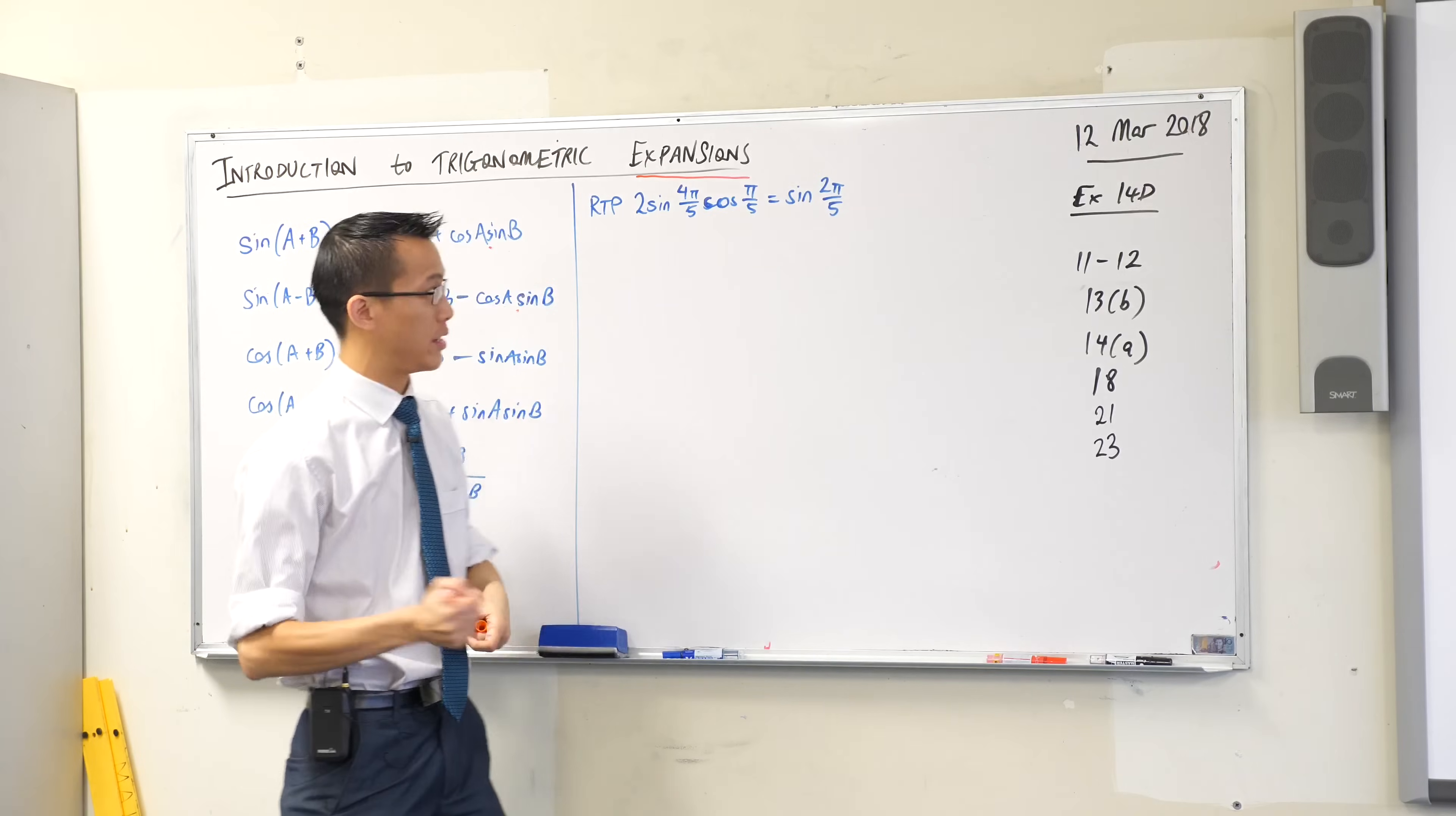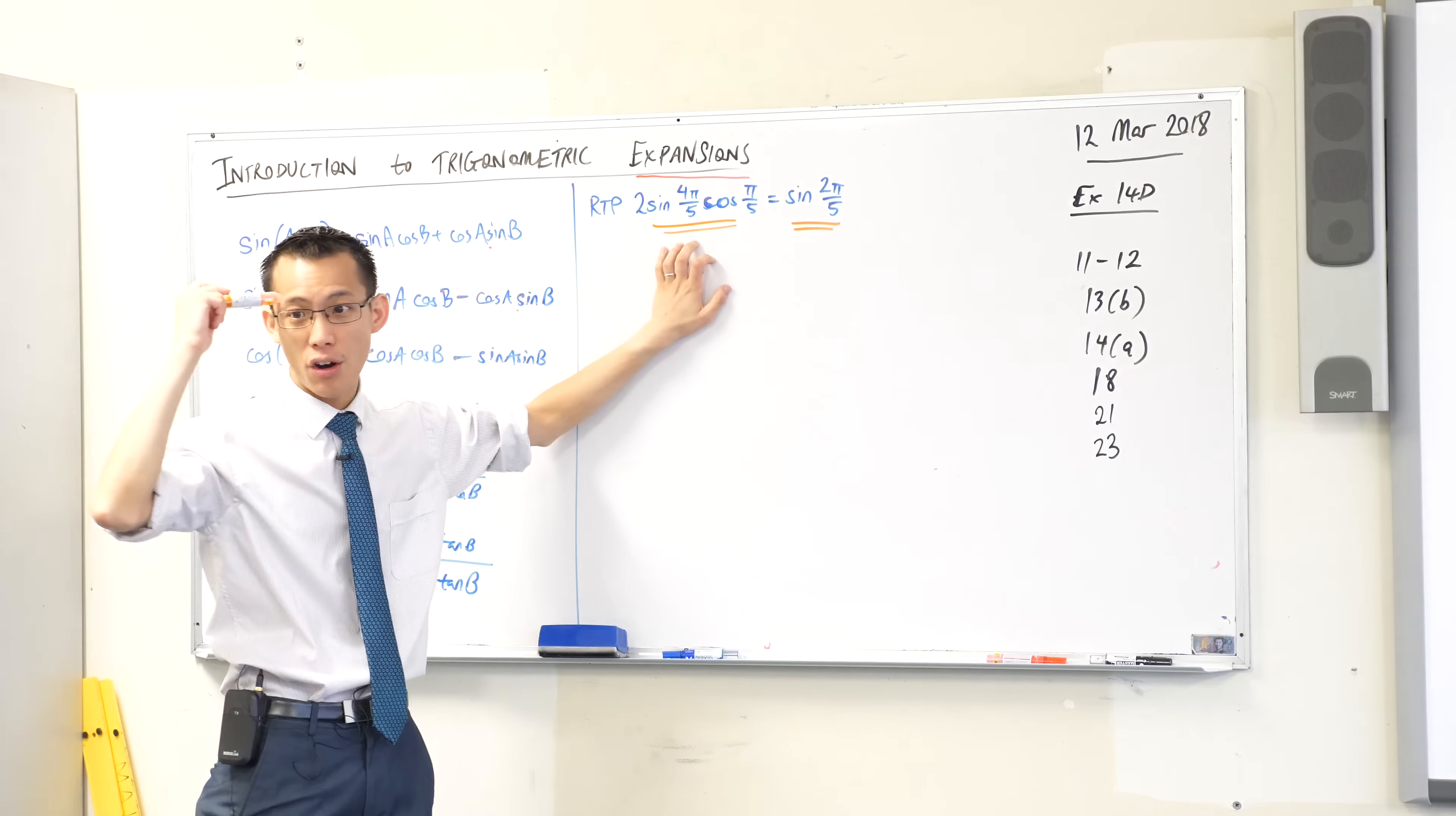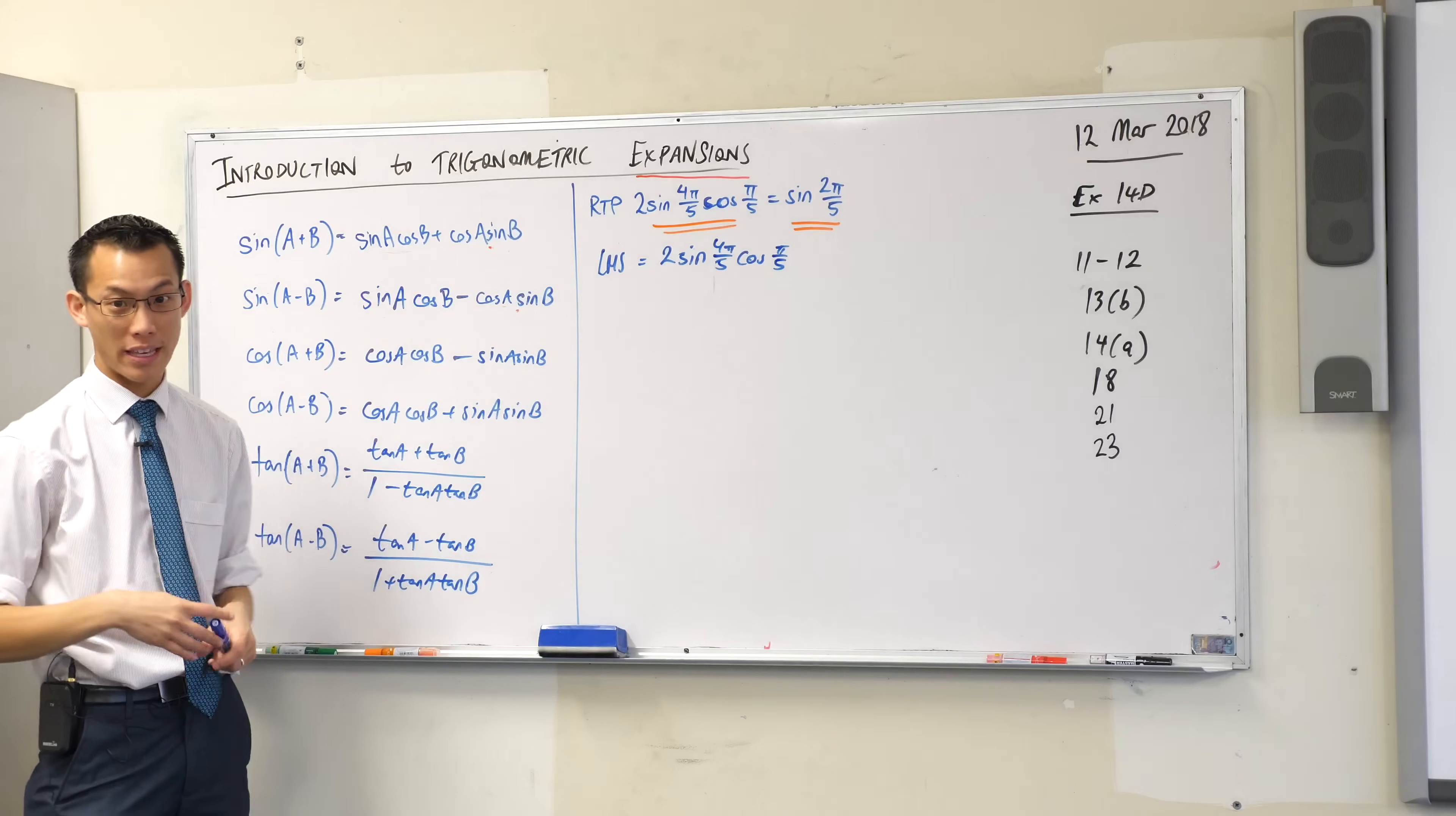Now, my second question to you is, which way will I go? I'm required to prove this identity. Do you think it makes more sense to go from the left to the right or to go from the right to the left? Which does your instinct say? My instinct says left to right. You can do either. It's an equation, so the sides are equal. But our brains are generally better at working with a complicated object and turning it into a simple object. Does that make sense? So I'm going to work with the left hand side here. I'm going to say left hand side equals and I'm just going to write it as it stands.